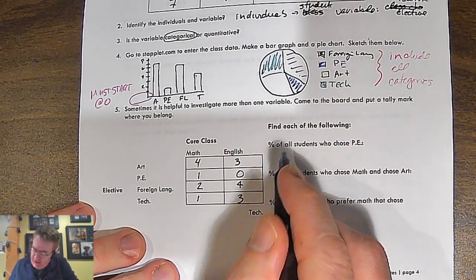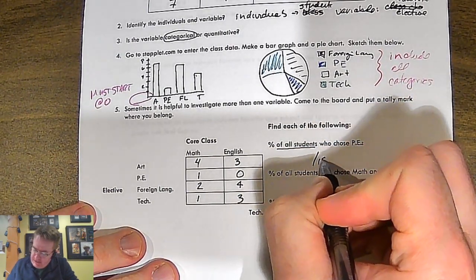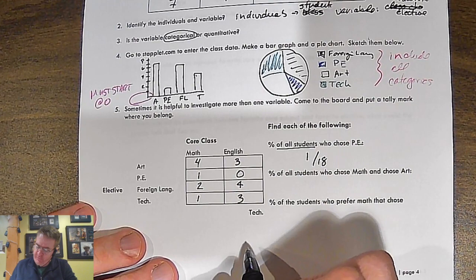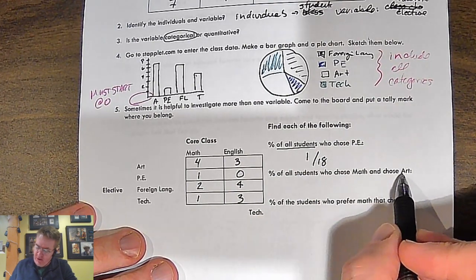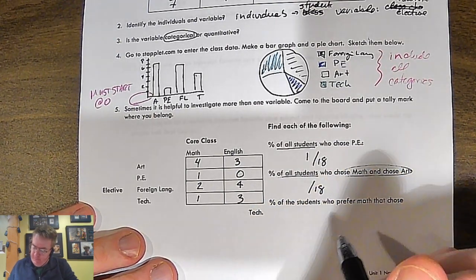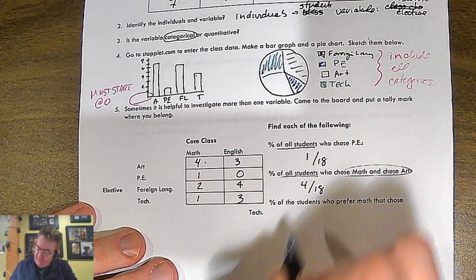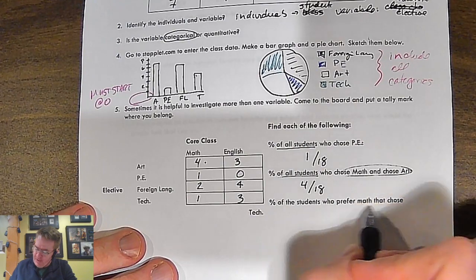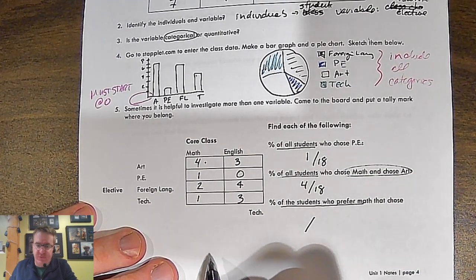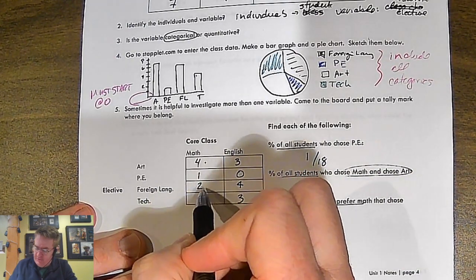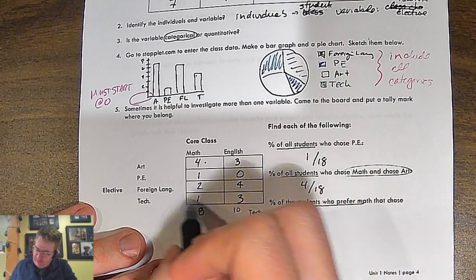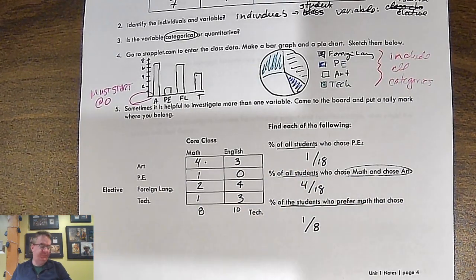Percentage of all students. Of all students, that's gonna be your group. So we're doing this out of 18. If you chose PE, we had one out of the 18. Percentage of all students who chose math and chose art. So we want all students who chose math and art. This is one big group. So again, here, I'm going to take the 18. Math and art right there, four. Percentage of students who prefer math, that chose tech. So percentage of the students who preferred math, that's your subgroup. So how many people preferred math? We have four, one, so that'd be five, seven, eight. We've got 10 over here. So that would be tech. So we have one out of those eight people there.